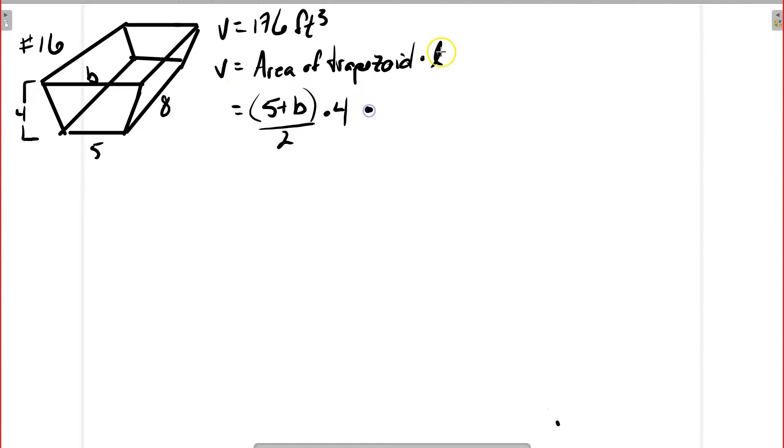We take all of that and multiply it by the length, which is 8, and we're told that equals 176. I would typically rearrange this, so I divide the 4 by the 2, ending up with 2 times 8, which is 16, times (5 + b).